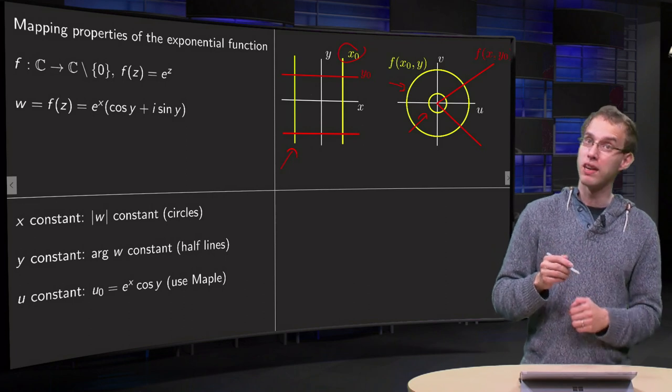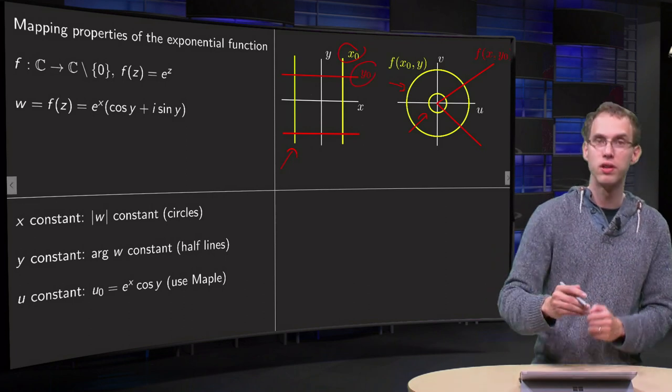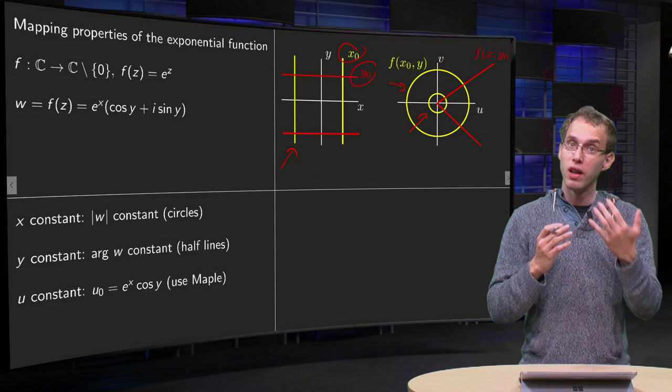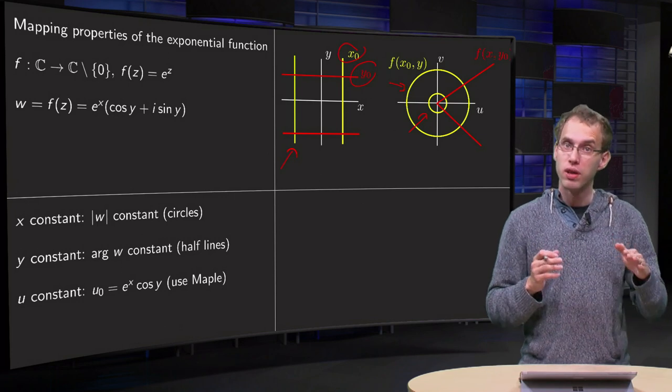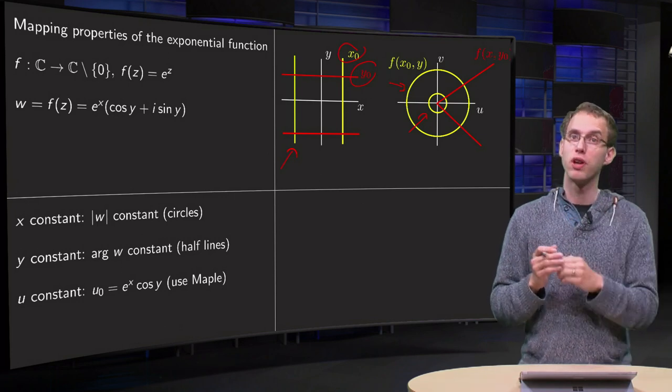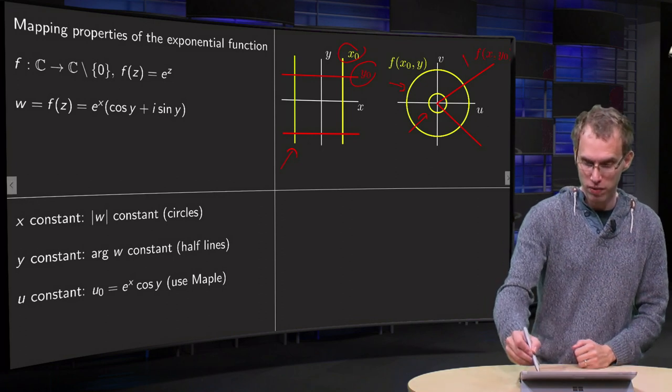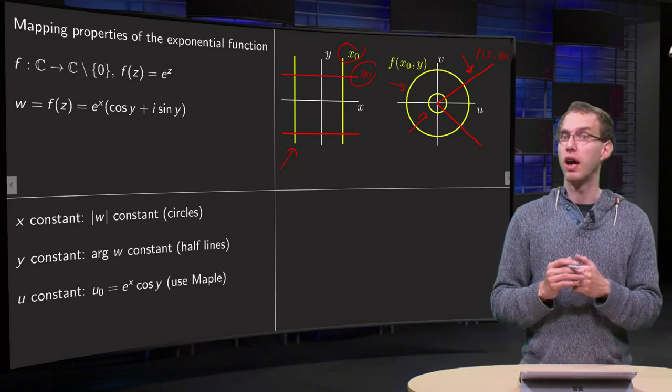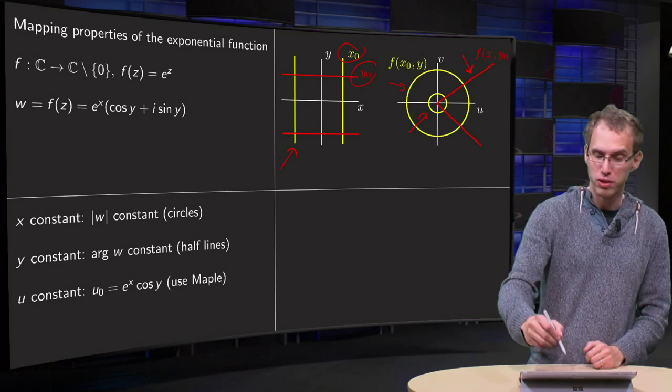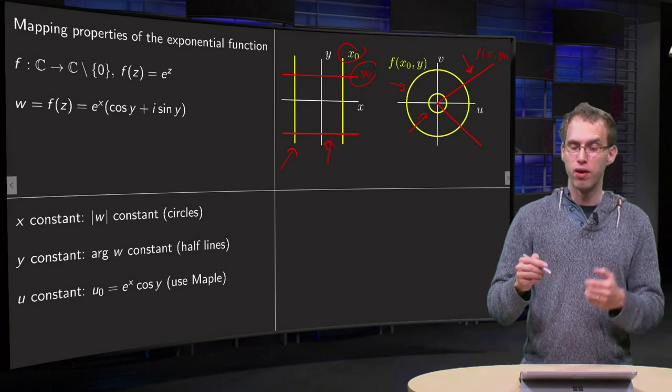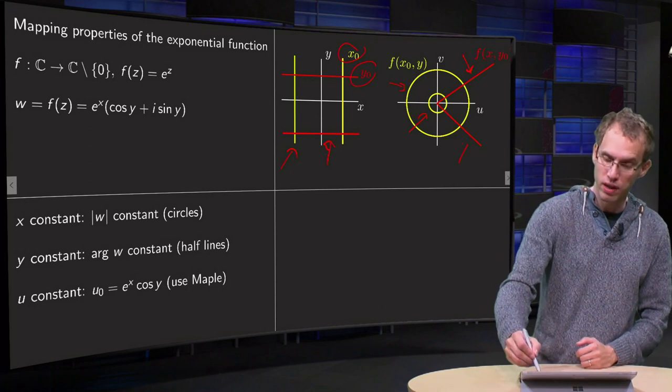What happens if we take y constant, like y0? We get a line, because we have a constant argument y0, which is positive now, so we get the line over here. And what happens if you take some negative y1? We get again a half line, but now this one over here.